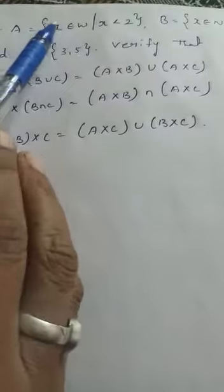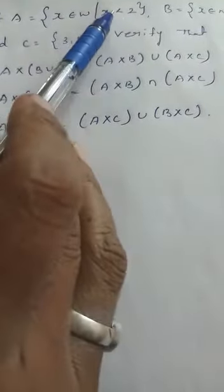A is equal to X belongs to W such that X is less than 2. What does mean by W? W is whole numbers. So X is a whole number. Whole numbers start from 0. It starts from 0 but it should be less than 2. So your values, your elements will be 0 and 1.